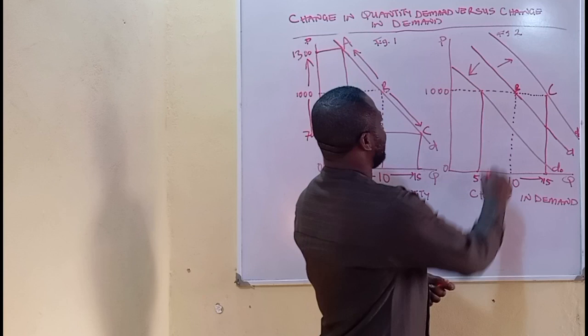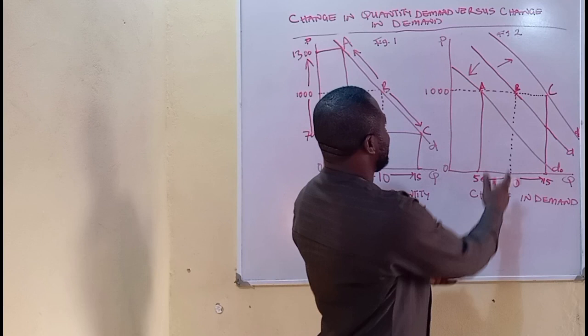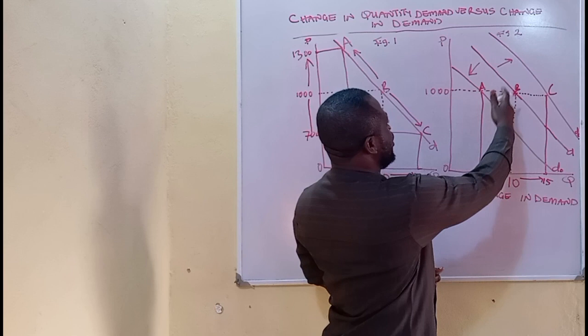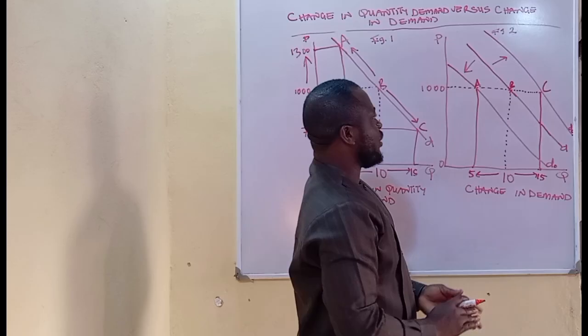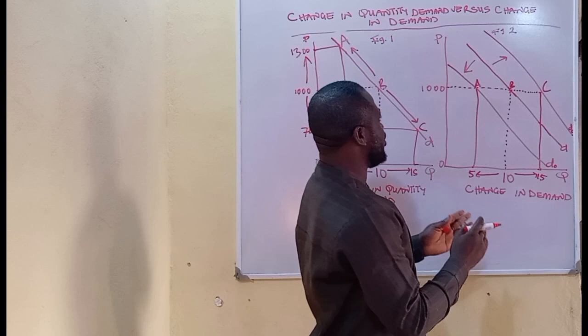Now, this series of movements from point B to point C or from point B to point A, which resulted in shifts in the original demand curve, is what is known as change in demand — otherwise known as a shift in the demand curve.